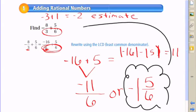So just to review quickly, that's pretty close. The negative 1 and 5 sixths is very close to that negative 2 estimate we had originally. That checks out.